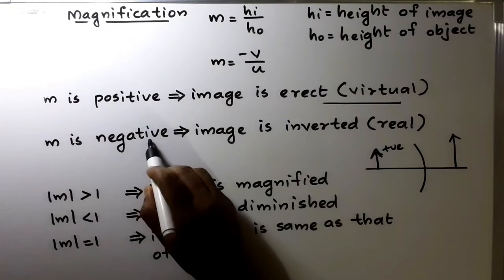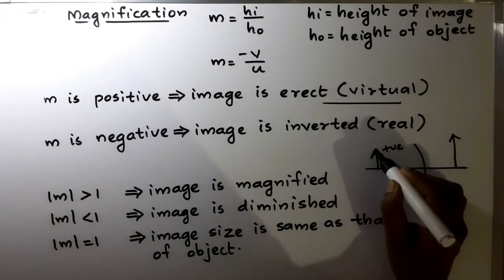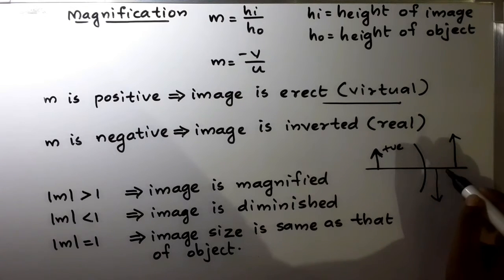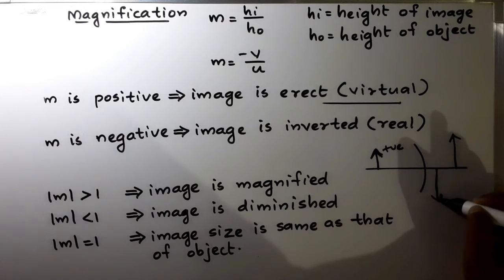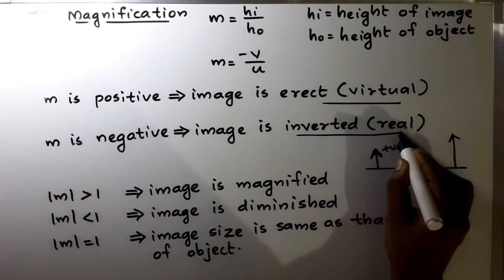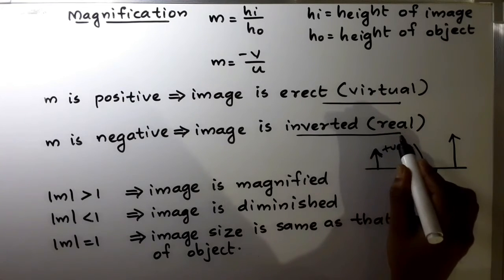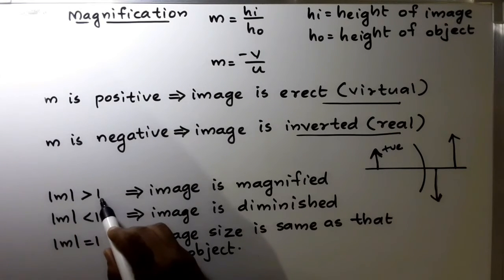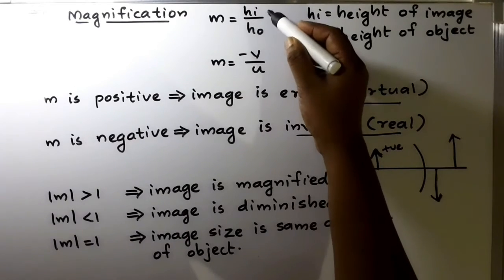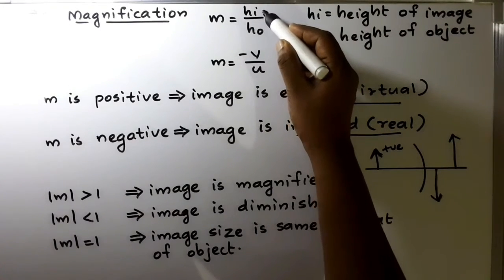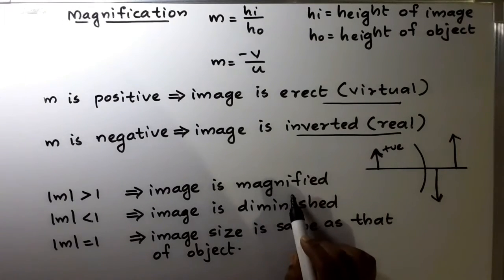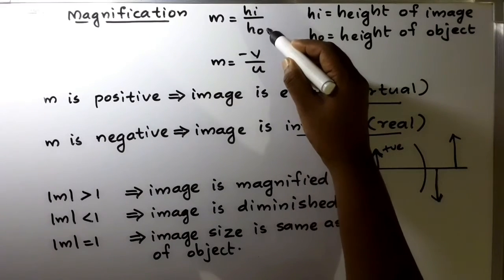If M is negative, since object height is always positive, the image height is negative, meaning the image will be inverted. An inverted image is always real in the case of spherical mirrors. If the magnitude of M is greater than 1, that means Hi is bigger than Ho — the image is magnified.